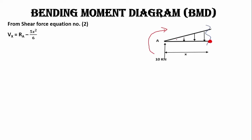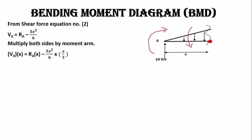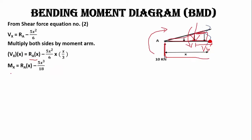The reaction RA contributes a moment of RA × x. The triangular load has a total resultant of 5x²/6 acting from the centroid, which is at x/3 from the point x (shorter edge). Multiplying the resultant by the moment arm x/3 and simplifying gives the bending moment equation: Mx = 10x − 5x³/18.